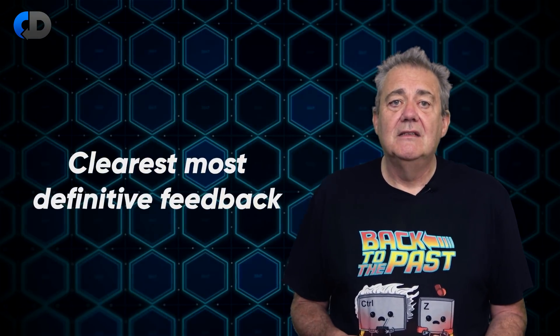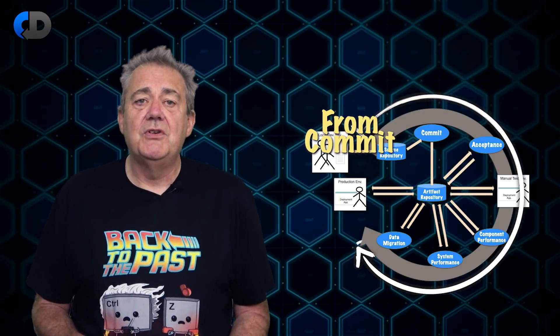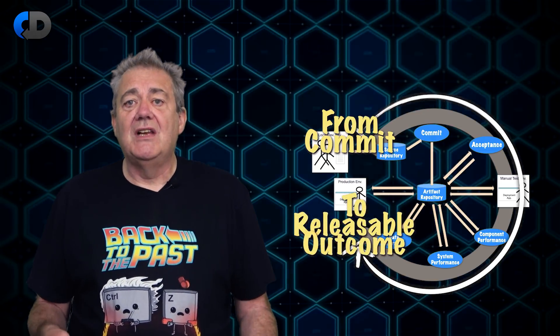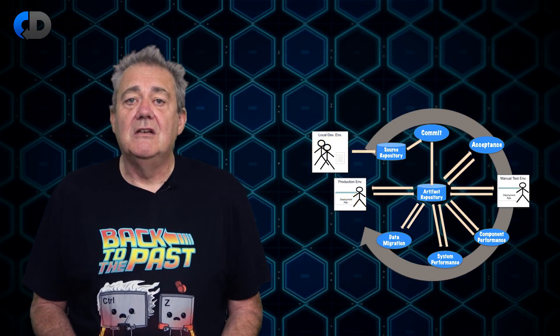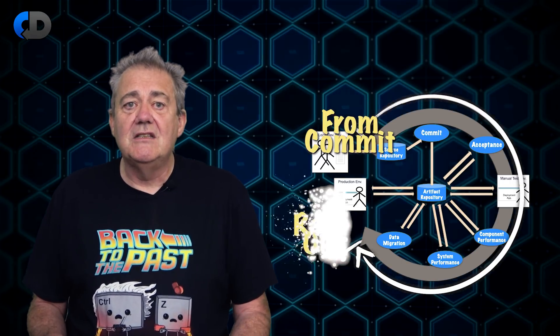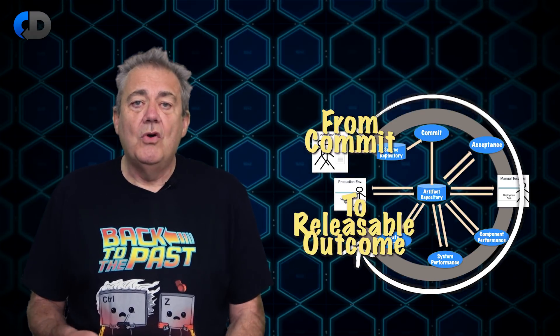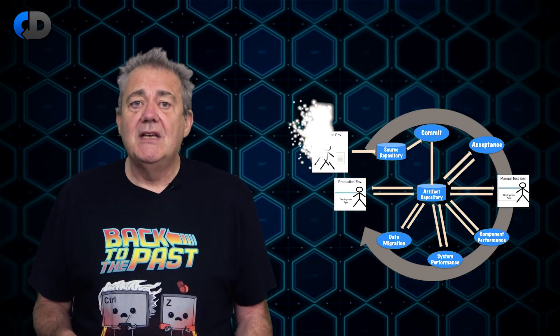Even so, there are still significant technical advantages to working in a continuous delivery way, even before thinking about the extra advantages that continuous deployment brings. Continuous delivery gives us the clearest, most definitive feedback on our changes that we can possibly get, short of knowing that our users find them valuable. The standard that we set is releasability — is our change safe and ready to release? In continuous delivery, our deployment pipeline is definitive for release. If our pipeline passes, there's no more work to do before we're ready to release our change into production. That gives us a clear definition of the level of confidence we need to achieve. We automate testing for everything that determines releasability: does it work, does it do something useful for users, is it fast enough, secure enough, resilient enough, compliant with any relevant regulations? If the pipeline says it's good, it's good to go.